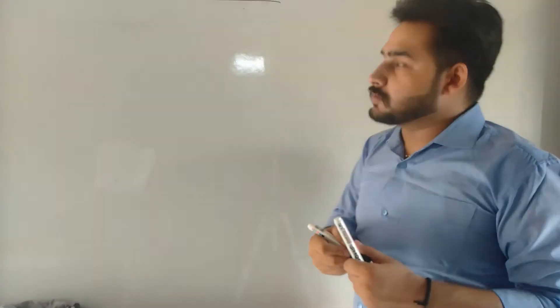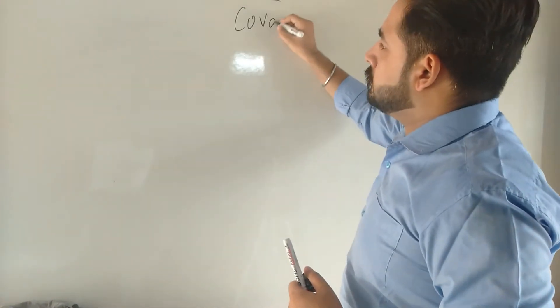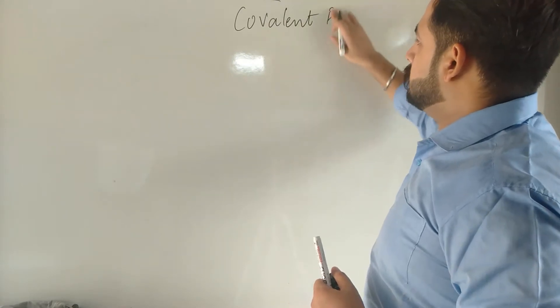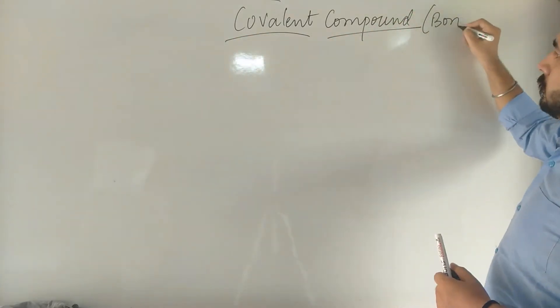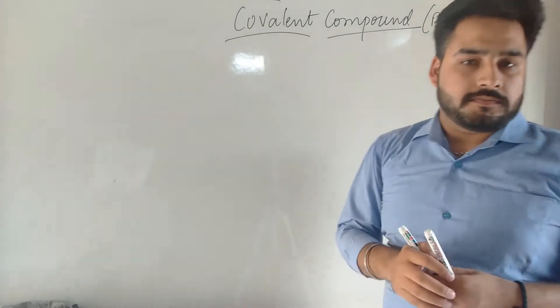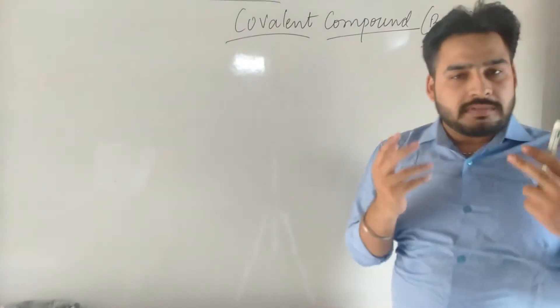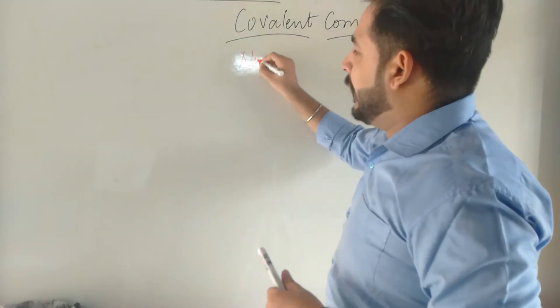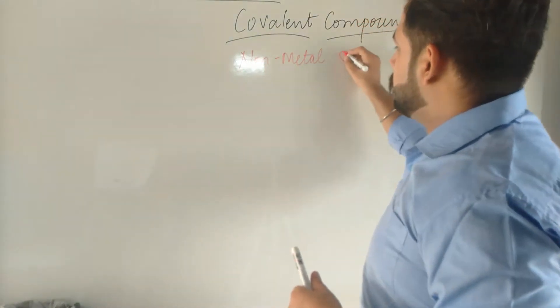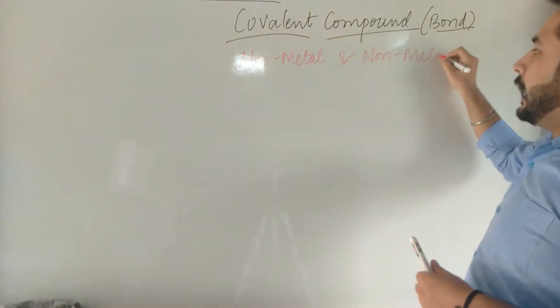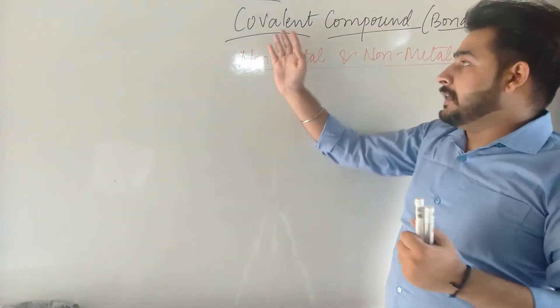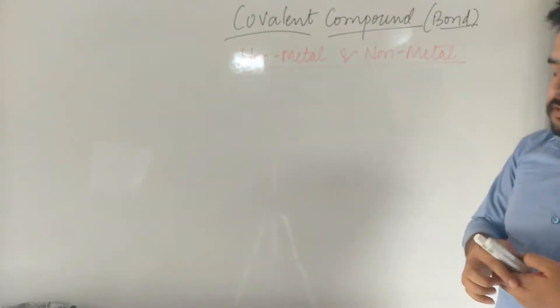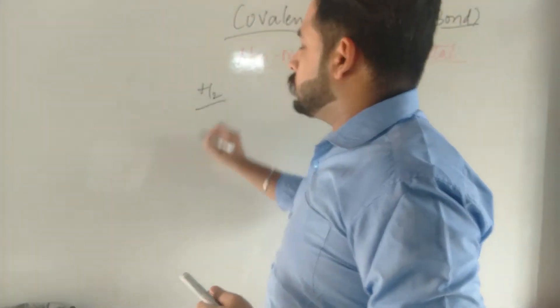In the last video we already discussed about the covalent compound but not in detail. A covalent bond is also formed between two atoms that are both non-metals. This is one difference between ionic and covalent bond — ionic bond is formed between metal and non-metal, whereas covalent bond is formed between non-metal and non-metal. Let's take the example of H₂, hydrogen.